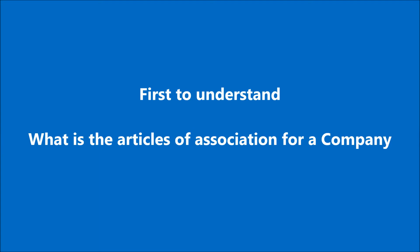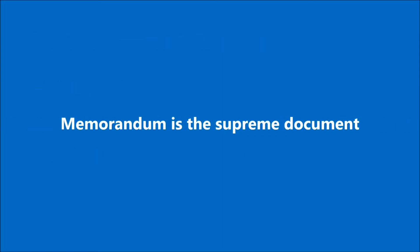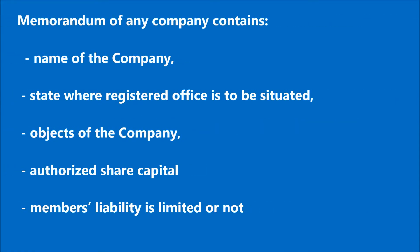Before we start the discussion on entrenchment provisions, let's understand what Articles of Association are for a company. From the perspective of a company, the Memorandum and Articles of Association are two basic documents. The Memorandum is the supreme document of the company. It contains the name of the company, the state where the company's registered office is situated, the main objects of the company, authorized share capital, and whether the members' liability is limited or not.